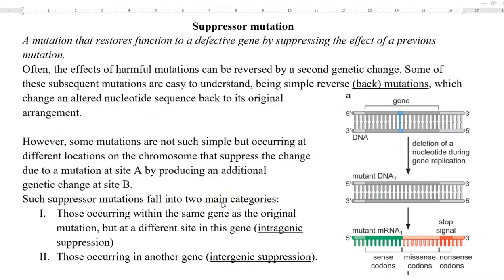For example, a mutation has been caused on site A of a chromosome, whereas a second additional genetic change — the suppressor mutation — may take place on site B of the chromosome, and that can suppress the effect of the previous mutation.